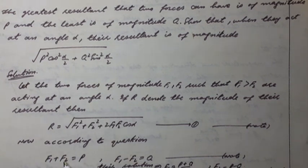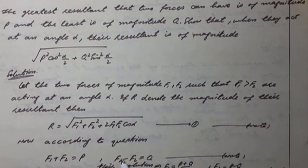According to question, f1 plus f2 is equal to p and f1 minus f2 is equal to q. Greatest and smallest. Solving these, we have f1 is equal to p plus q over 2 and f2 is equal to p minus q over 2.